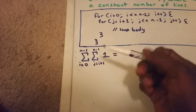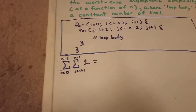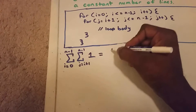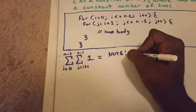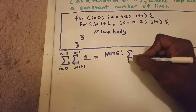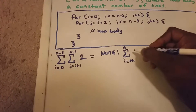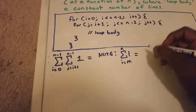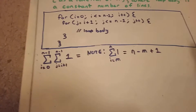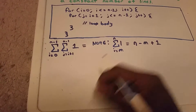Now we want to simplify these two summations in order to figure out the asymptotic worst case complexity. To solve the inner loop first, we need to note that the summation from i equals m, where m is just some constant, to n of 1 is equal to n minus m plus one. That's one of the formulas for summations.